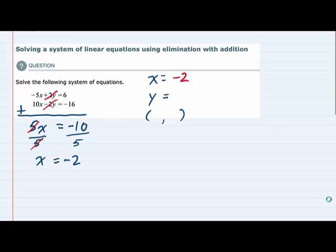But now we need to find the y value. What we can do is take either one of these equations that we were given and substitute the x in that equation with our x value, negative 2. I'm going to work with the one here in the top and replace the x value with negative 2. So we would have minus 5x, and x here is negative 2, and then bring down the rest of that equation: plus 2y equals 6.